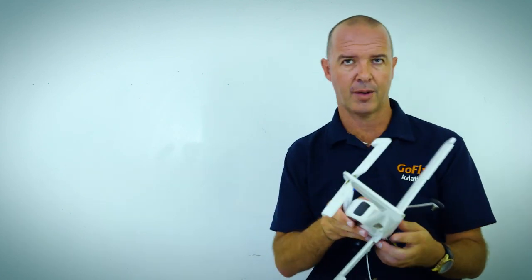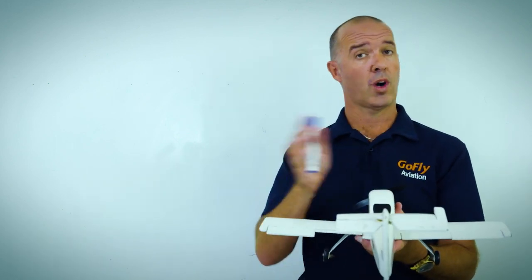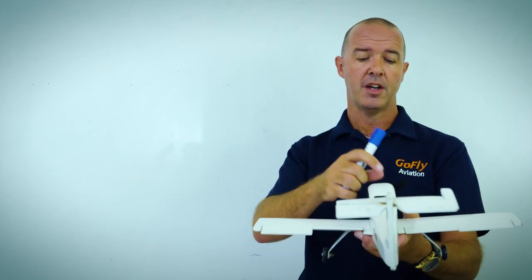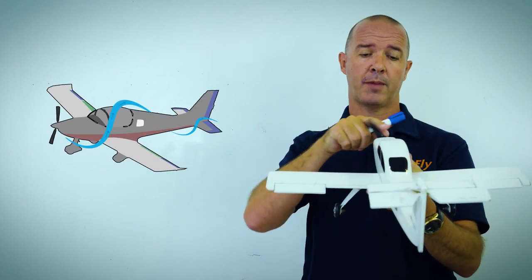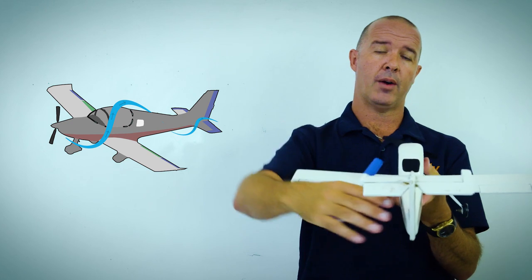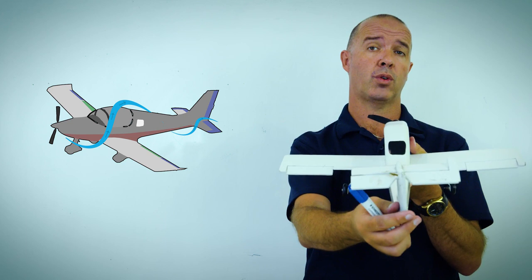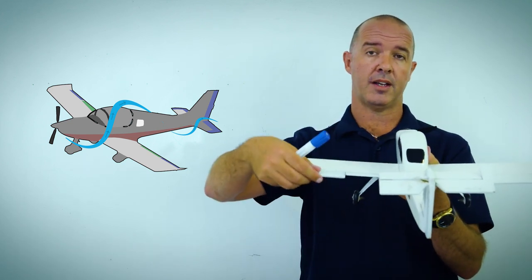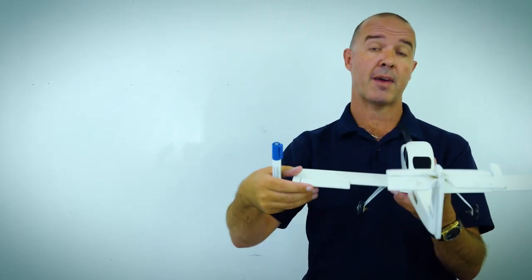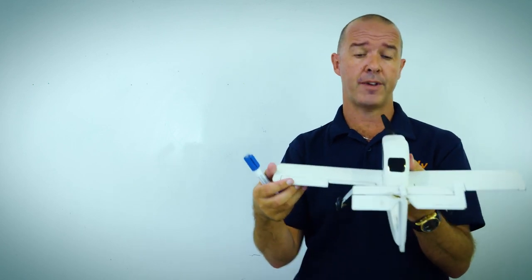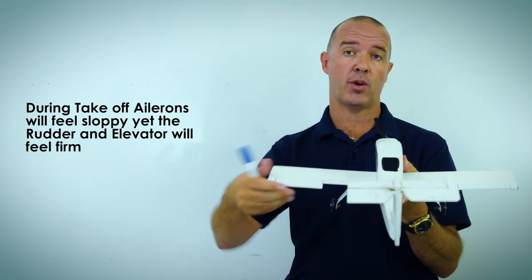There may be some phases of flight where some control surfaces feel quite firm and others quite sloppy. A good example is on takeoff: we've got a lot of power being produced and a lot of airflow being produced by the propeller, and this airflow tends to hit our elevator and rudder area. So on takeoff, the rudder and elevator can feel quite firm and responsive. However, the ailerons out here aren't affected by that propeller slipstream, so they may actually feel quite sloppy. On takeoff, you may feel that the rudder and elevator are quite sensitive and responsive, while the ailerons can still be quite sloppy.